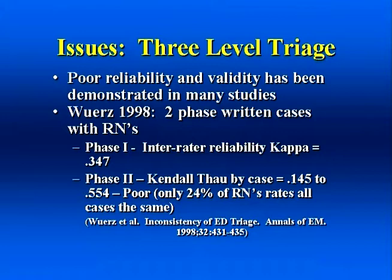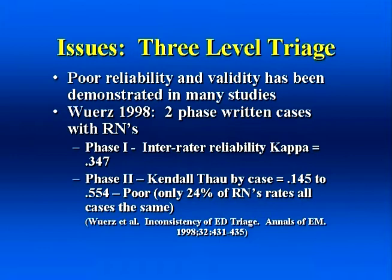A triage system would be deemed not valid if a high proportion of low-acuity patients were admitted to the hospital, as typically patients with low-acuity complaints are discharged home from the emergency department. Now let's look at what we know about three-level systems. The late Dr. Wurz examined these concepts by asking triage nurses to rate written patient scenarios using a three-level system. In phase one, kappa scores equaled about 0.347. In phase two, Dr. Wurz measured intra-rater reliability and found even more concerning results — kappa scores were between 0.145 and 0.554. Very poor. Even worse, only 24% of nurses rated all their cases the same during both phases.